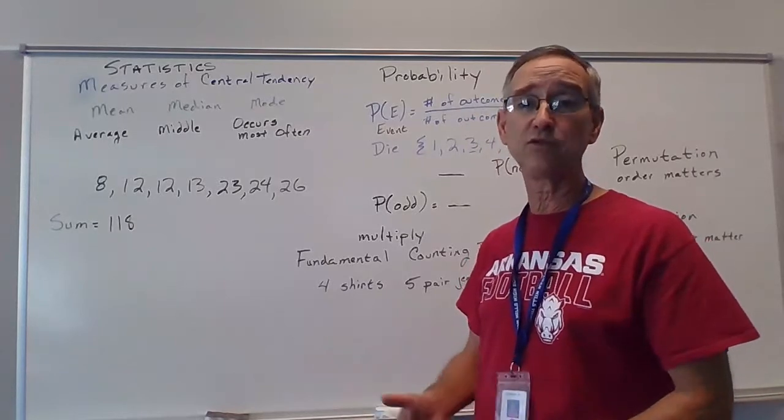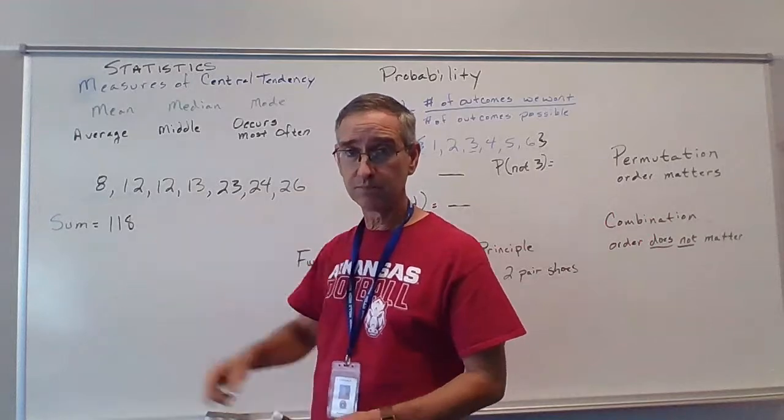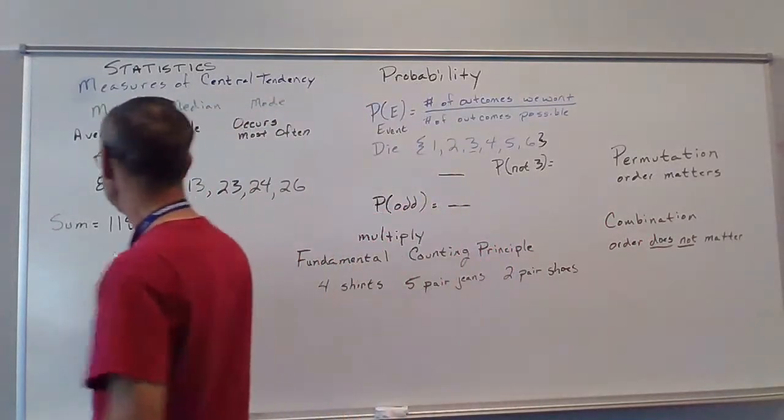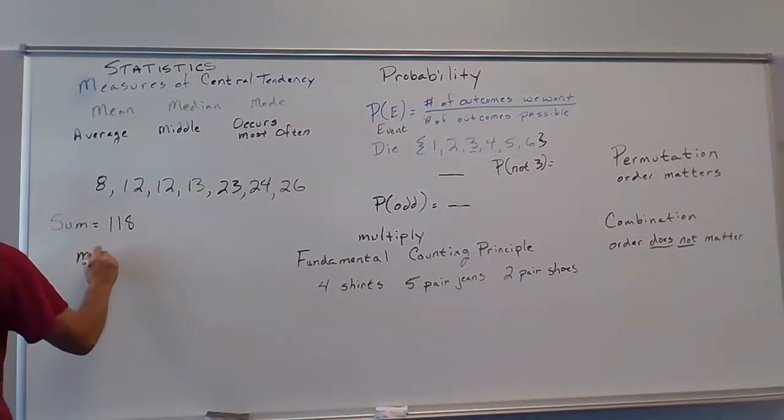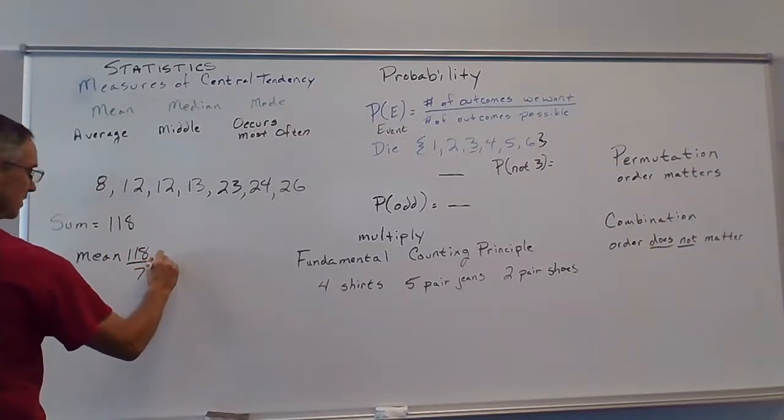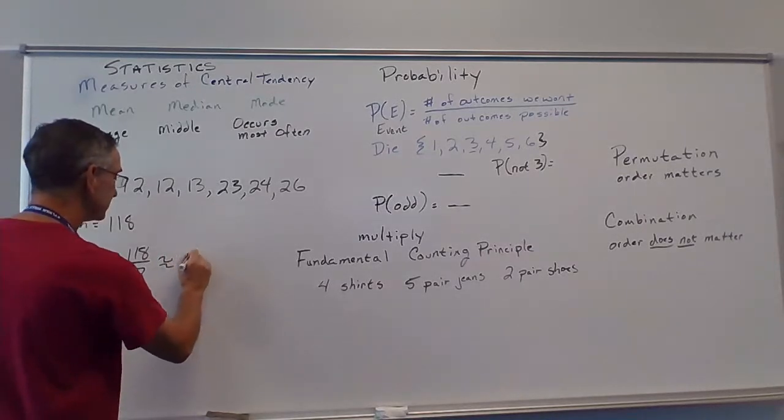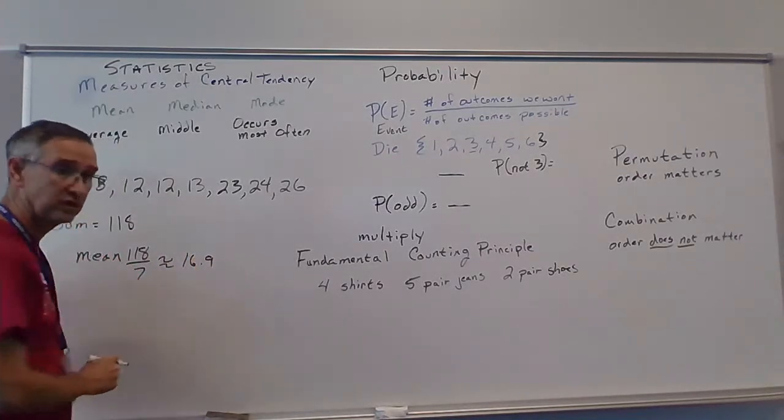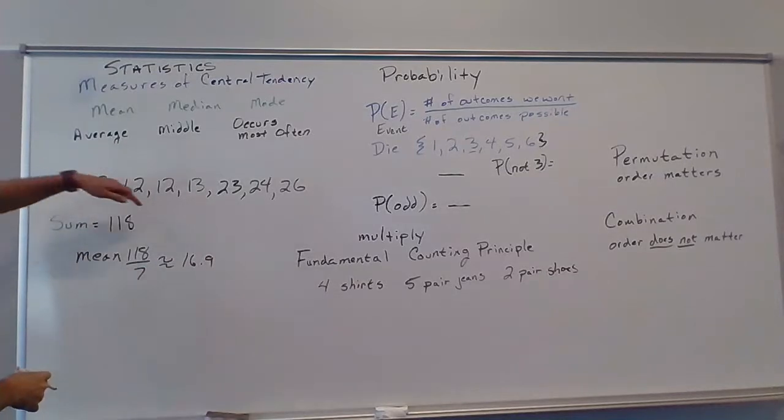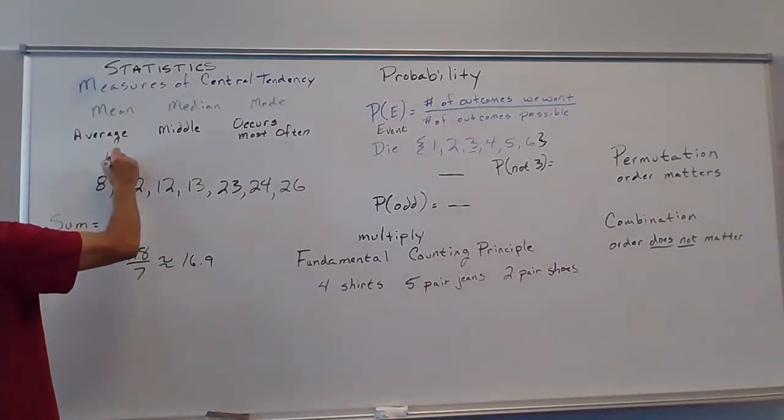Okay, so we're gonna find the average, find the mean. So I've added them together and I get 118. So to find the mean then, we take 118 divided by 7, which is about, approximately, or equals if you want to write it, it's about 16.9. So the average of this data set, the mean of this data set is 16.9.